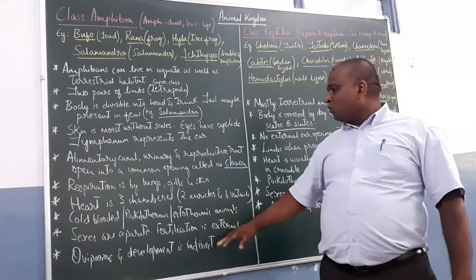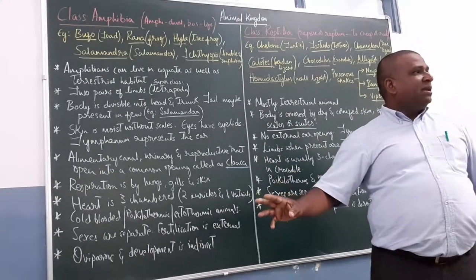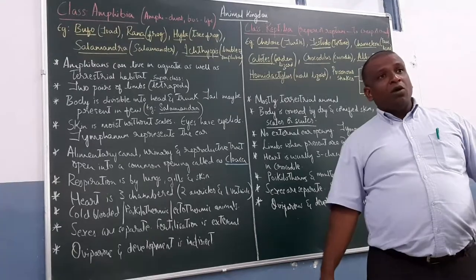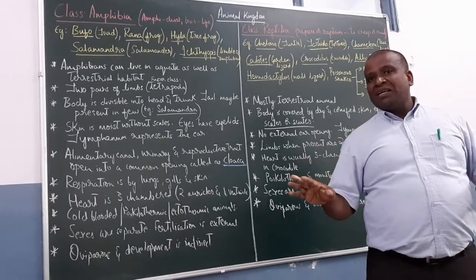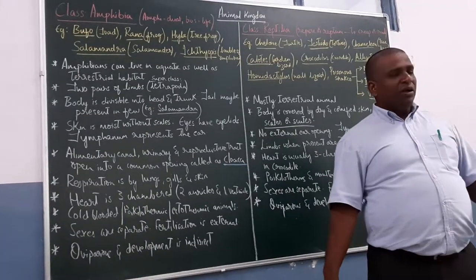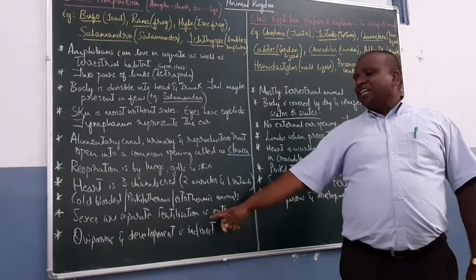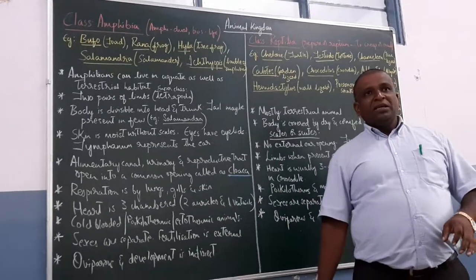Sexes are separate, male and female are separate, but they do not have copulatory organs. Based on presence or absence of fat pads, copulatory fat pads, you can differentiate between male and female. So, fertilization is external. That is, within water, the fertilization happens.